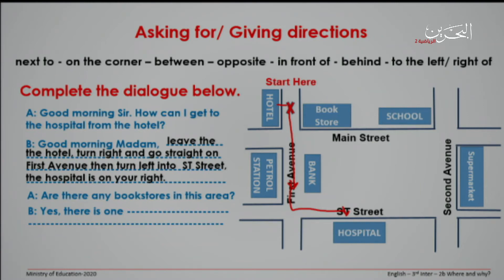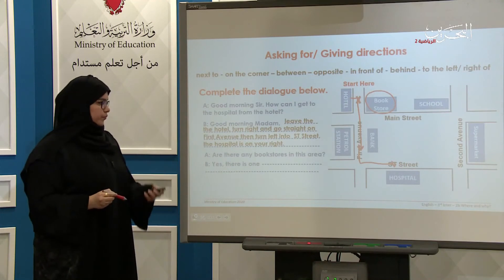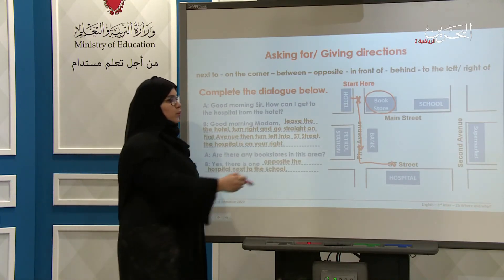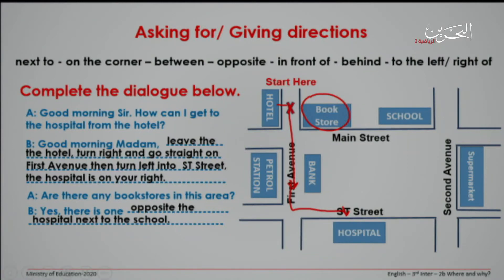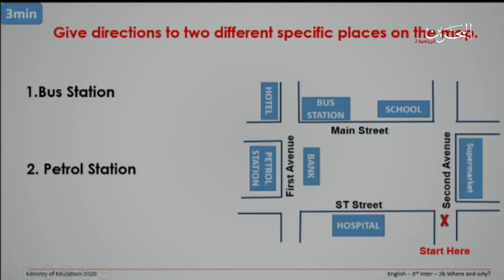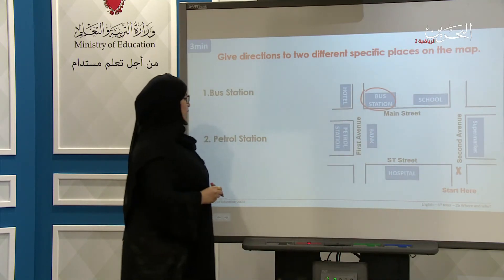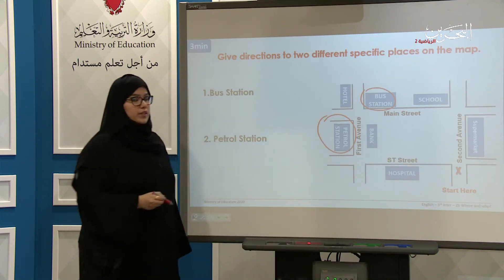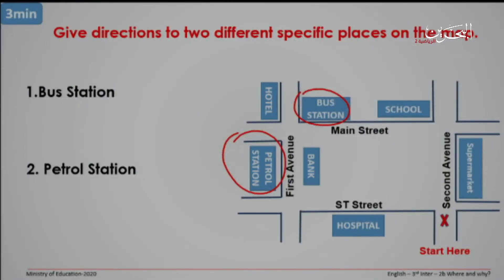Now we have given directions. We also need to ask for directions: 'Are there any bookstores in the area?' 'Yes, there is one.' 'Where is the bookstore?' It's opposite the hospital, next to the school. Now that we've asked for and given directions, we move to Task number four: giving directions to two different places on the map — the bus station and the petrol station. You have three minutes to write directions from the starting point.